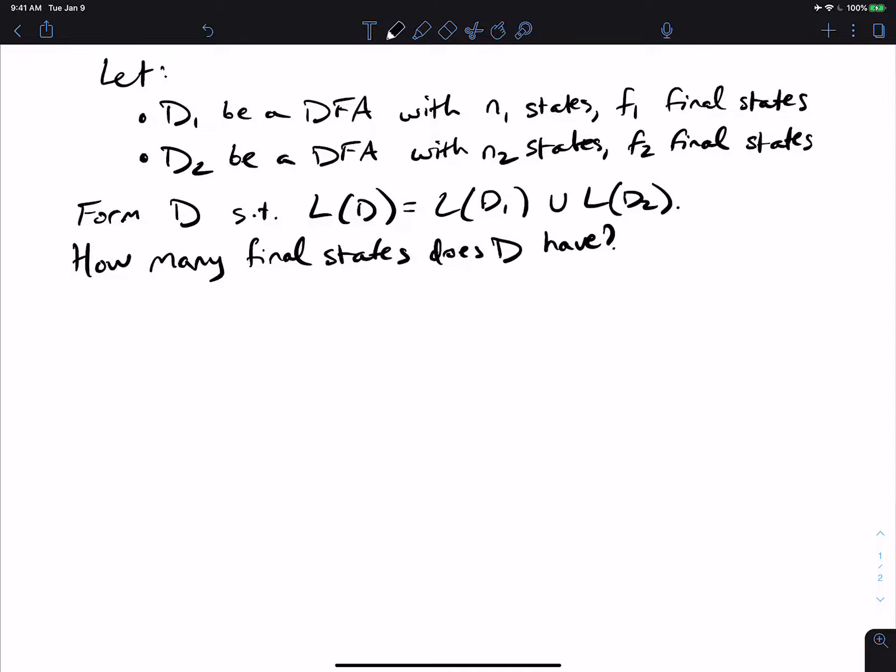All right, today we have a really interesting problem, which is looking at two DFAs, D1 and D2, and they have a certain number of states, a certain number of final states.